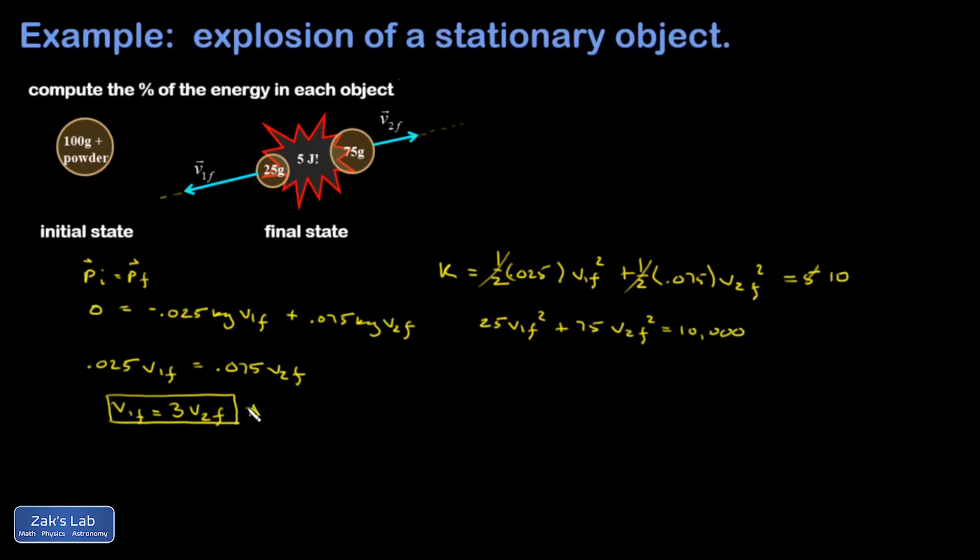And now I'm going to substitute from the result that I got from my momentum equation. V1 final can be replaced with 3 V2 final. And I've got 3 squared V2 final squared in there times 25. So that's 9 times 25. That gives me 225 in this term. 225 V2 final squared plus 75 V2 final squared equals 10,000. So that's 300 V2 final squared equals 10,000.